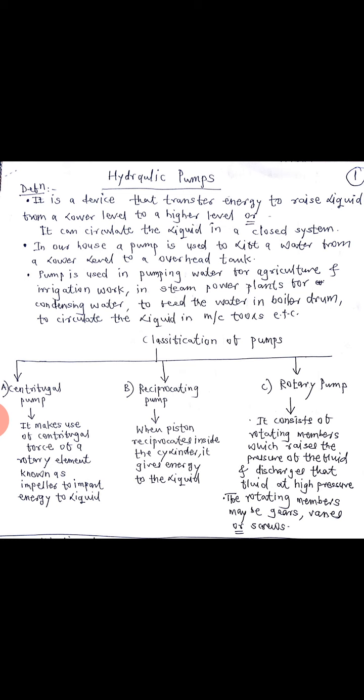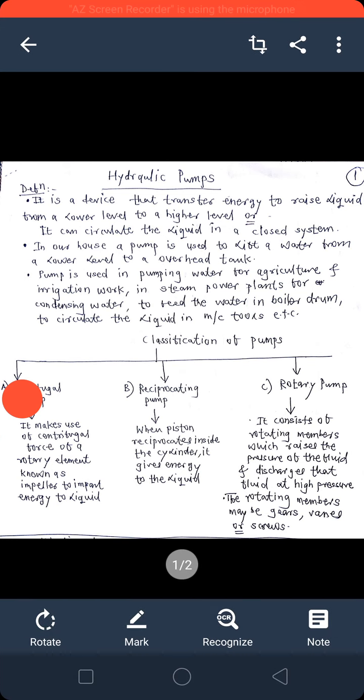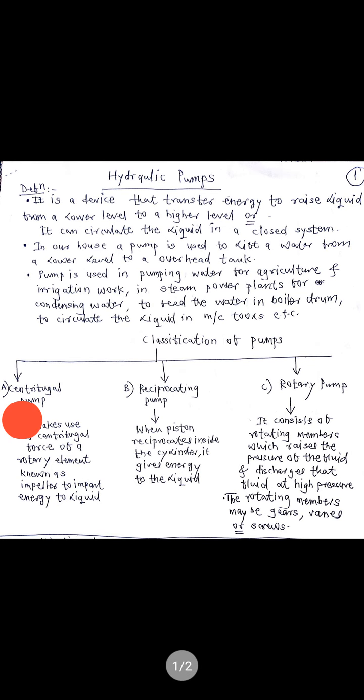The third one is rotary pump. A rotary pump consists of rotating members, for example gears, vanes, screws, etc. Because of the rotating members, the pressure is raised and the liquid or fluid can be lifted from one portion to the other portion.